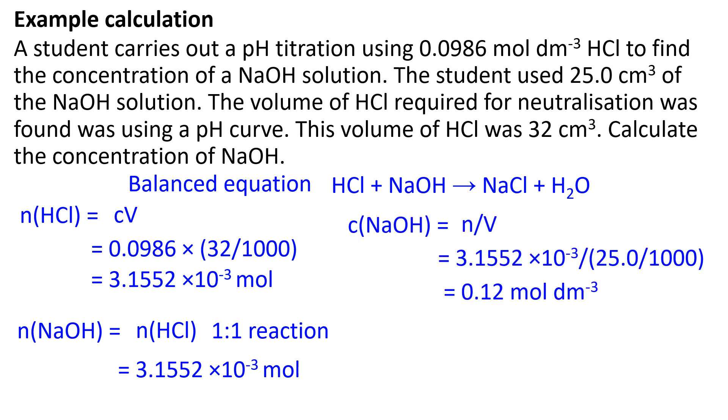Finally, work out the concentration of sodium hydroxide. Concentration is equal to amount divided by volume. 25 cm³ of sodium hydroxide was added to the beaker. This has to be converted to dm³. The concentration of sodium hydroxide is 0.12 moles per dm³ given to two significant figures.